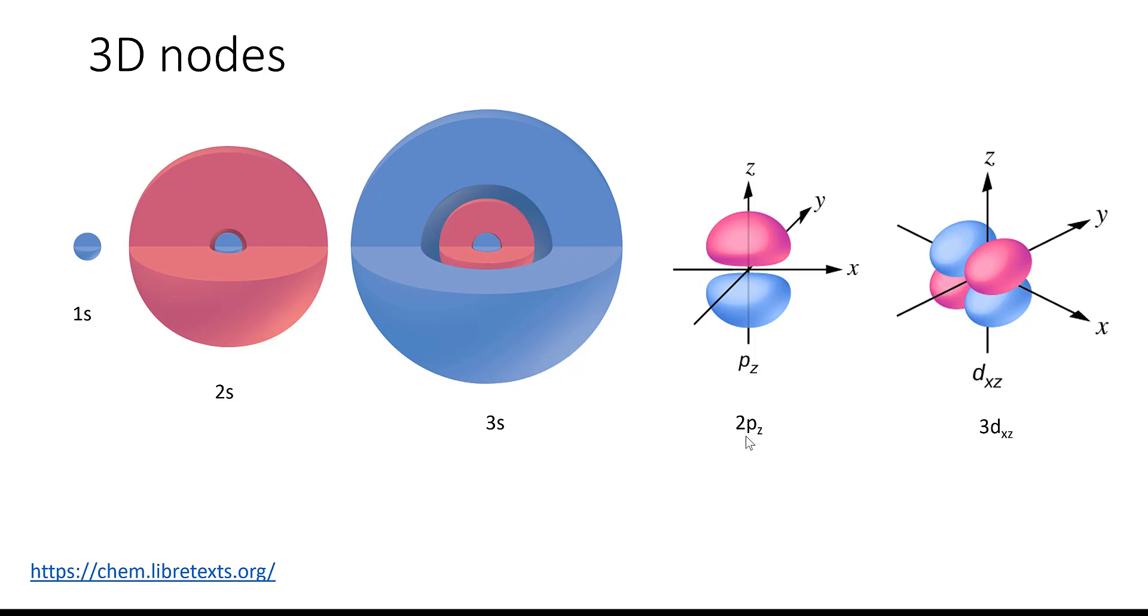In the 2pz orbital, for instance, the node is actually a plane. And this nodal plane lies along the xy-axis and it cuts horizontally across the two lobes. In the 3dxz orbital, there are two nodal planes. One lies along the zy plane and cuts vertically and the other nodal plane lies along the yx plane and cuts horizontally.